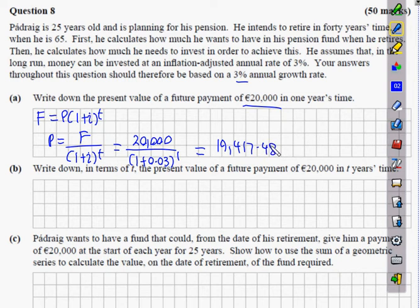Next one, write down in terms of T the present value of a future payment of €20,000 in T years time. Once again, P equals F, which is going to be 20,000 over (1.03)^T, because that's 1 plus i to the power of T. In this case, you put €20,000 in over here and that is your future value after any amount of years you want.